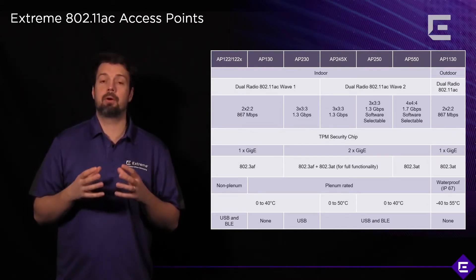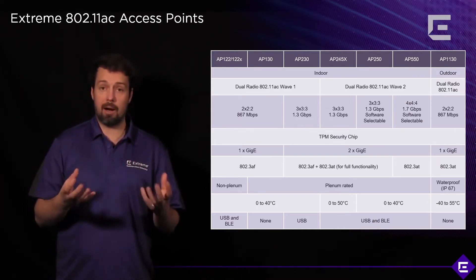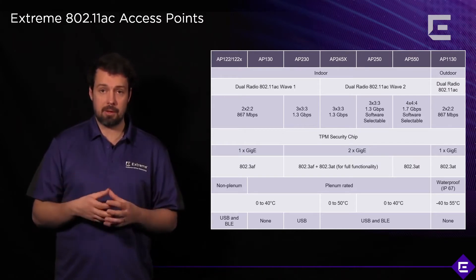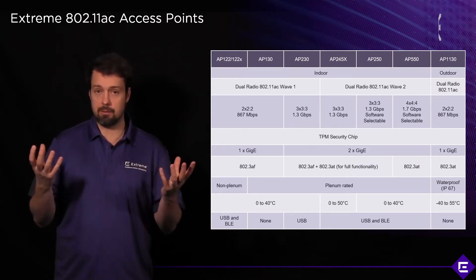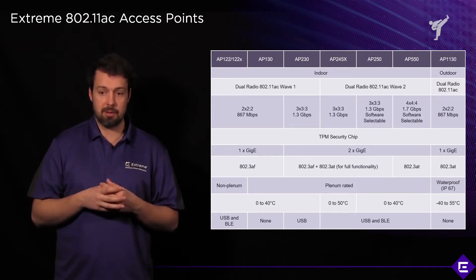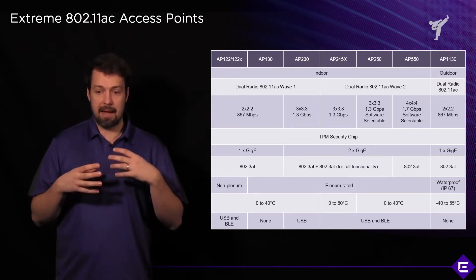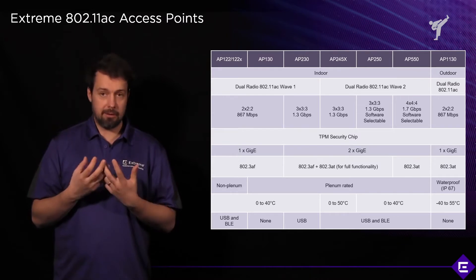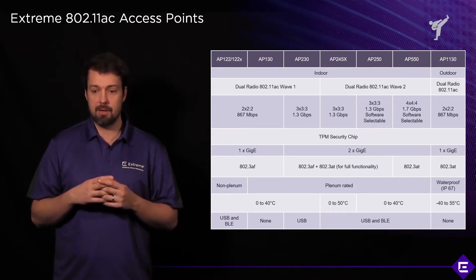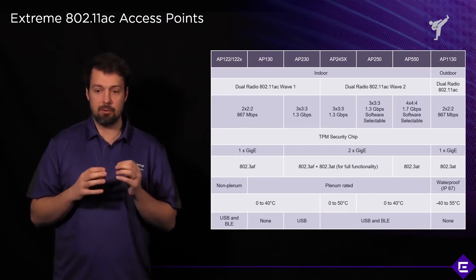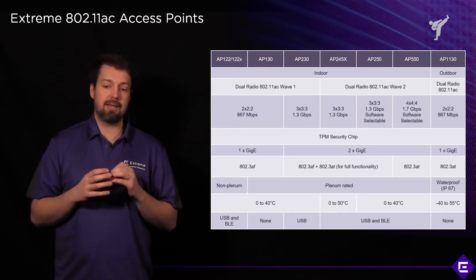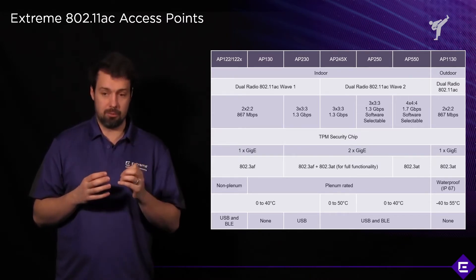The AP245X is very popular in warehouse scenarios because you can connect directional antennas to it. It has 3x3 radio capabilities and it's a dual radio AC Wave 2.